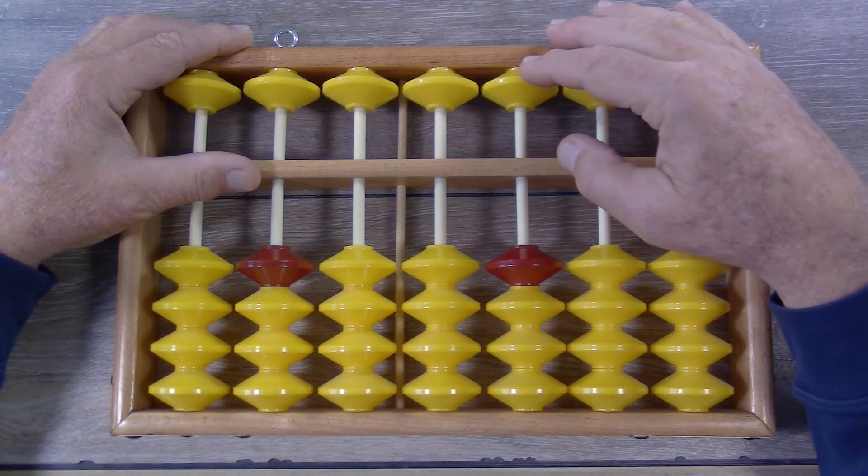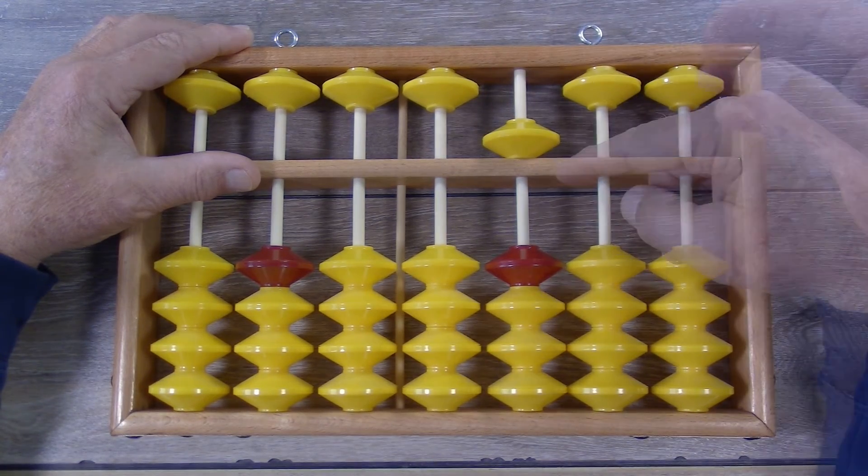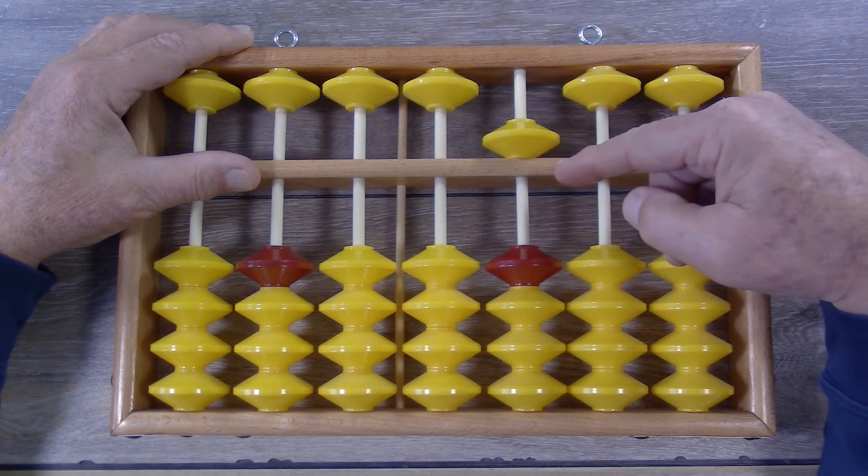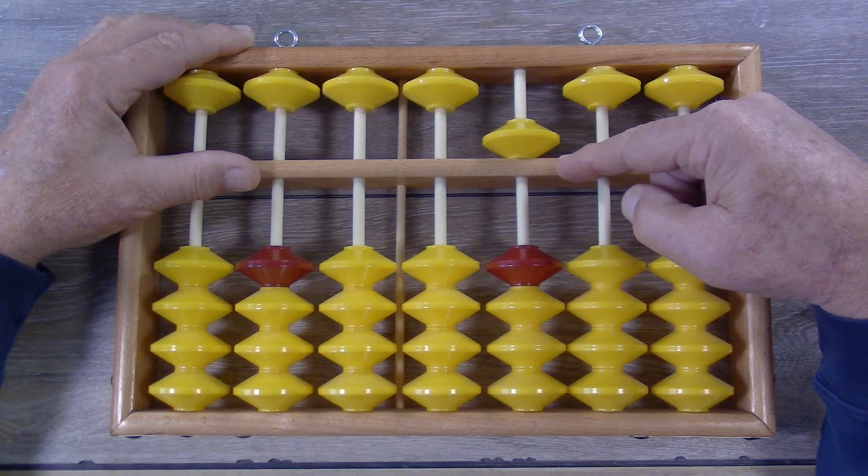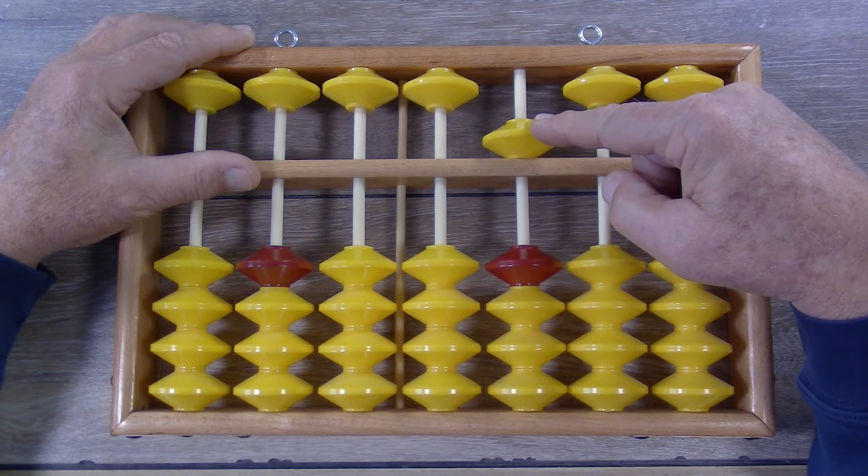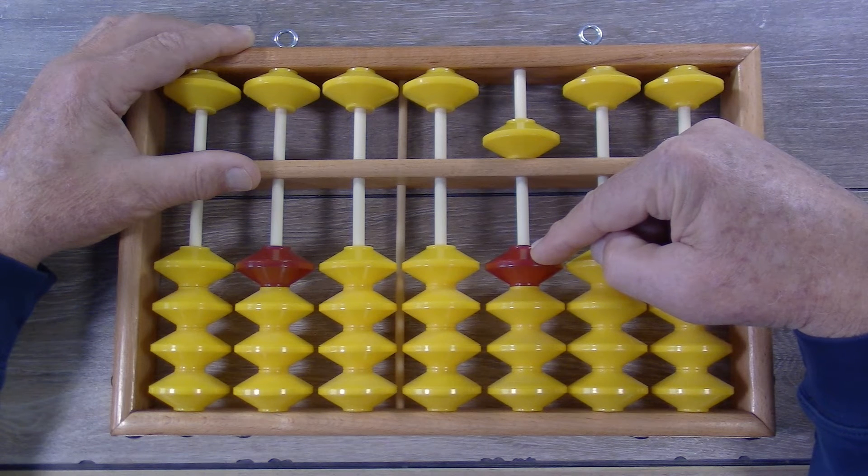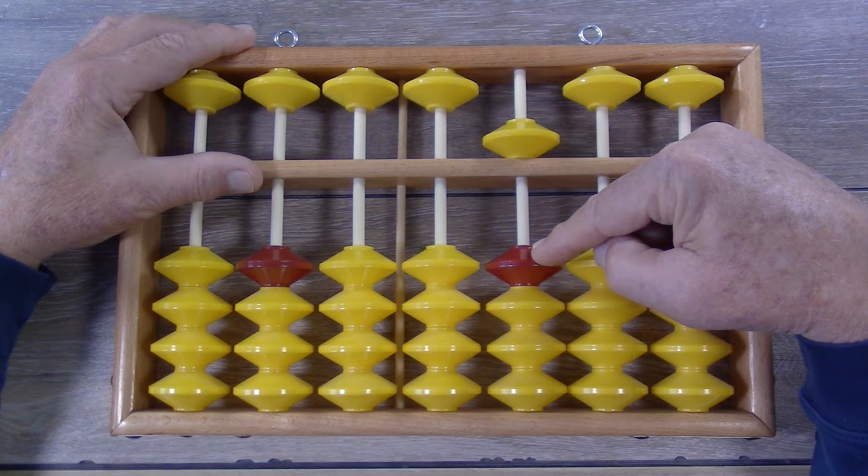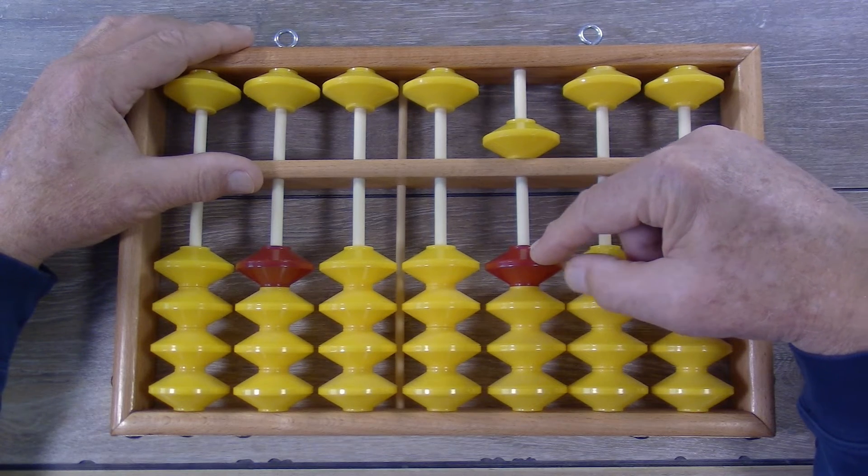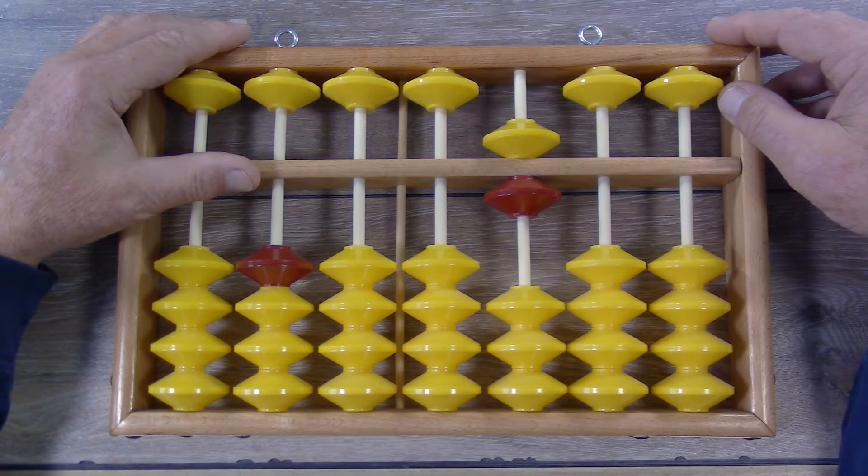The next problem will be a problem like five minus four. So can I directly subtract the four? No. Okay, second question. Is the minuend greater than four? Yes. And is the subtrahend less than five? Yes, I'm subtracting four. So do a five complements problem. So I'm going to subtract four. Instead, I add the five complement, which is one, and take away the five.